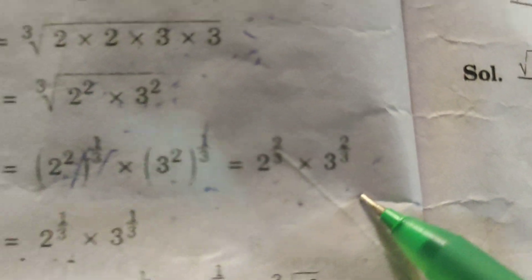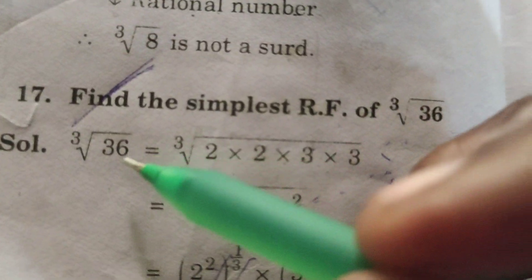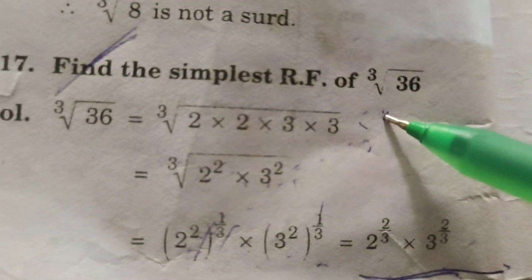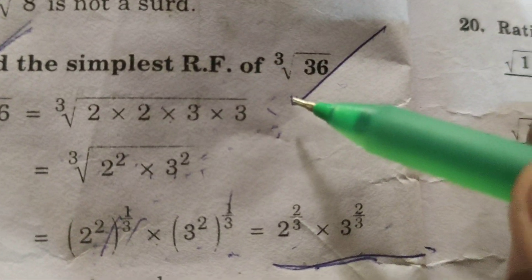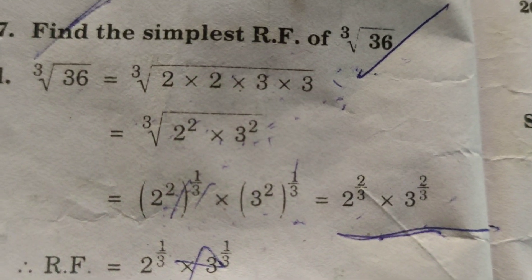This is the solution for the simplest form of the rationalizing factor of ∛36. Okay, thank you.